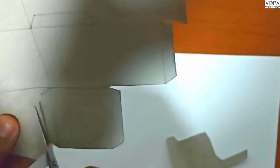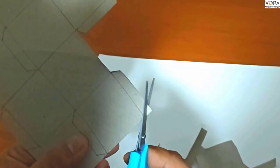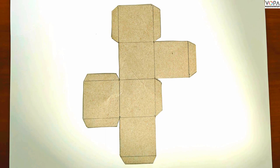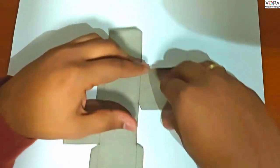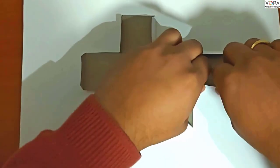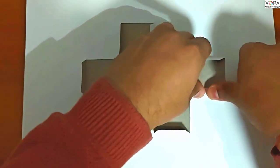Cut out the net along with the flaps. The final cube net looks like this. Now fold the flaps inside to ease the cube making process.